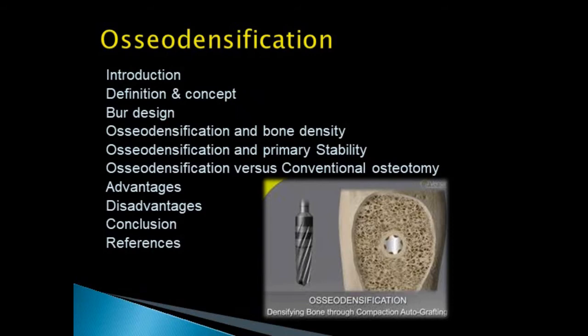The content includes: introduction, definition and concept of osteodensification, the burr design and how osteodensification affects bone density, primary stability of the implant, the differences between osteodensification and conventional osteotomy procedure, advantages, disadvantages, conclusion, and references.